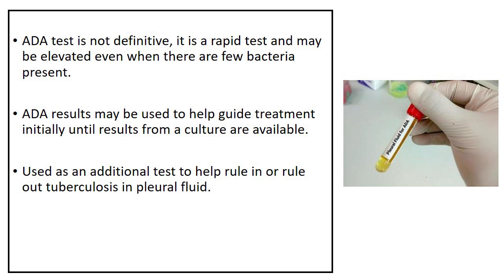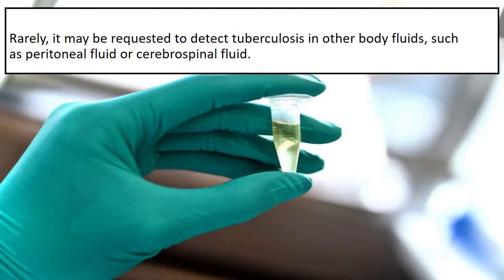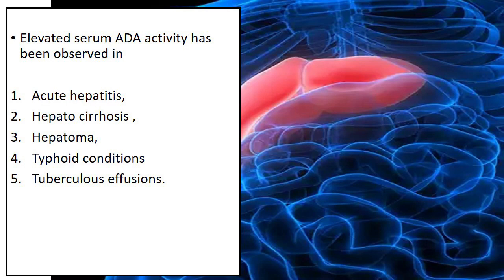ADA results may be used to help guide treatment initially until results from a culture are available. The ADA test is used as an additional test to help rule in or rule out tuberculosis in pleural fluid. Rarely, it may be requested to detect tuberculosis in other body fluids such as peritoneal fluid or cerebrospinal fluid.